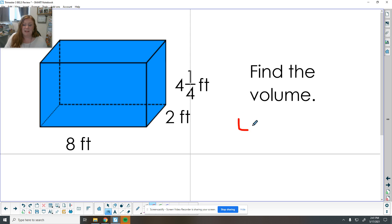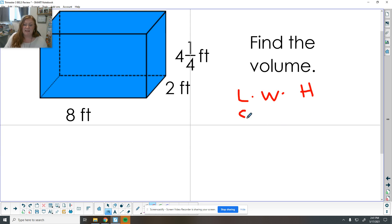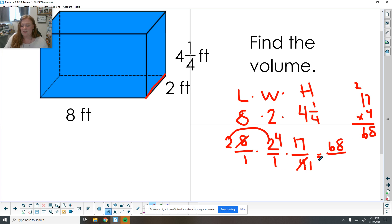Find the volume. We've got length times width times height. The length is eight. The width going back is two. The height going up is four and a fourth. So we want to make these improper. So eight over one times two over one. Here's 16 plus one is 17 over four. So I think we can do a little canceling here. So four divided by four is one. Eight divided by four is two. So two times two is four times 17. So 17 times four, 28, four, five, six. So 68 over one times one times one is one. So this volume is 68 feet cubed. We can fit 68 cubes that are a foot by a foot inside of this shape here.